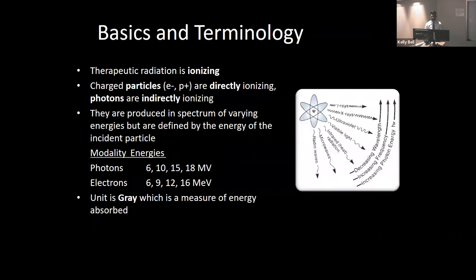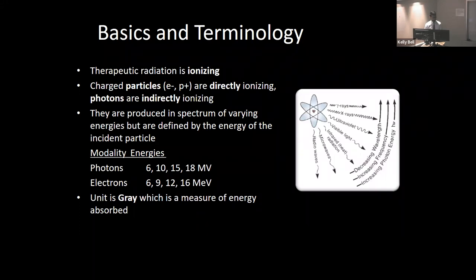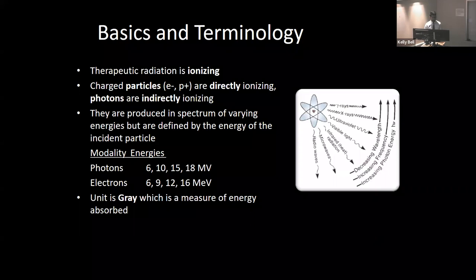Basics and terminology: any therapeutic radiation is ionizing. For most patients we're talking about photons, which are indirectly ionizing. We treat patients on a unit with 6 to 18 megavolt energy — the higher the megavolt, the deeper the depth of penetration for dose deposition. We measure dose in a unit called gray. For cardiac radioablation, we're treating patients with 25 gray in a single fraction. It's important to remember it's not just the total gray that matters — it's also the gray per day. 25 gray delivered in a single session is very different than delivered over 10 sessions in terms of biologic effects.